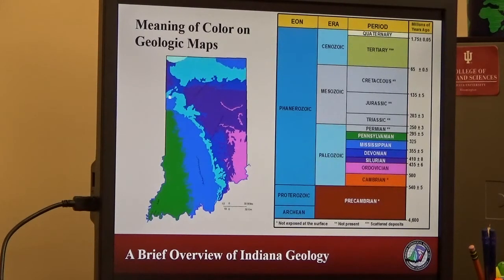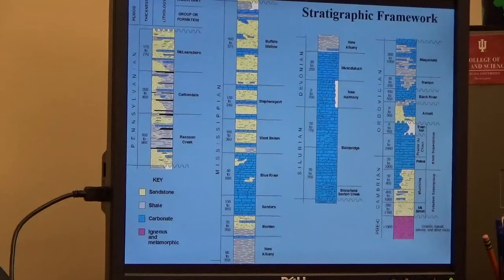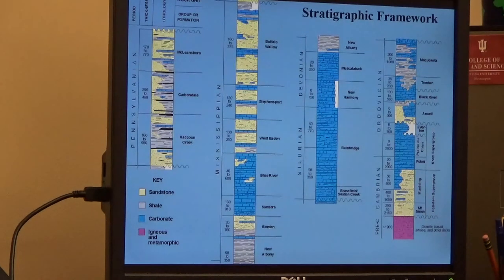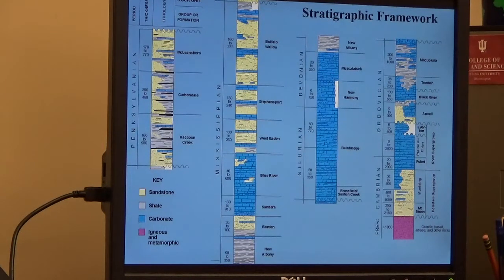When were these rocks deposited and what does that tell us about their environment? What we're seeing is a stratigraphic column for the various rock units here in Indiana. If we look at the basement rock, which is pre-Cambrian age rock, once we move into the Cambrian period, you're basically seeing a cycle or different deposits of sandstone in yellow, as well as carbonates, which includes limestone and dolomites in blue. And then you'll also see these gray deposits.